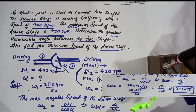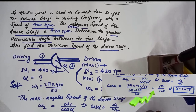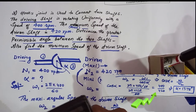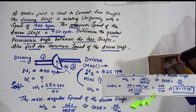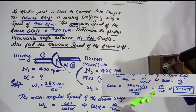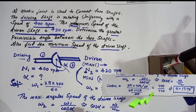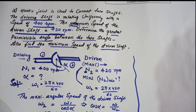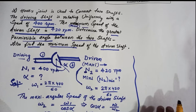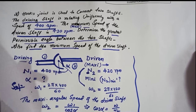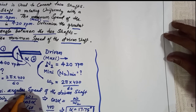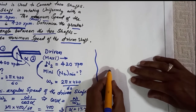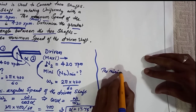So alpha = cos⁻¹(400 / 420). Calculating this gives alpha = 17.75 degrees, which is the maximum permissible angle between the two shafts. Now we move on to calculating the minimum speed of the driven shaft. We have another equation in the hook joint for the minimum angular speed.